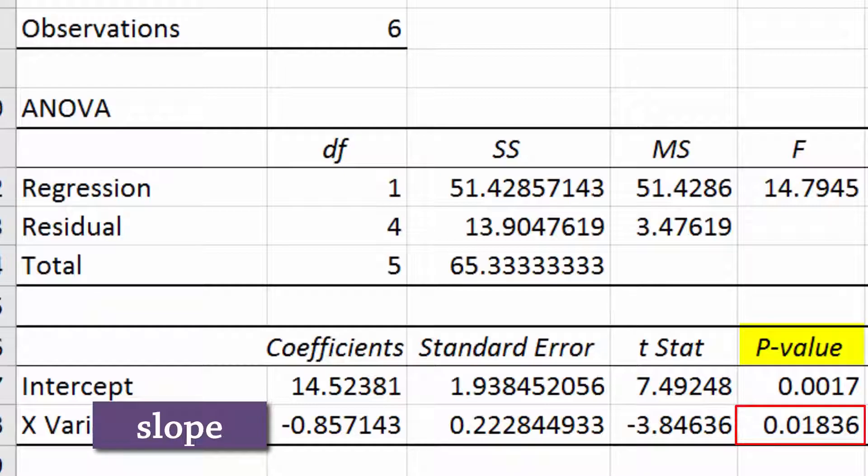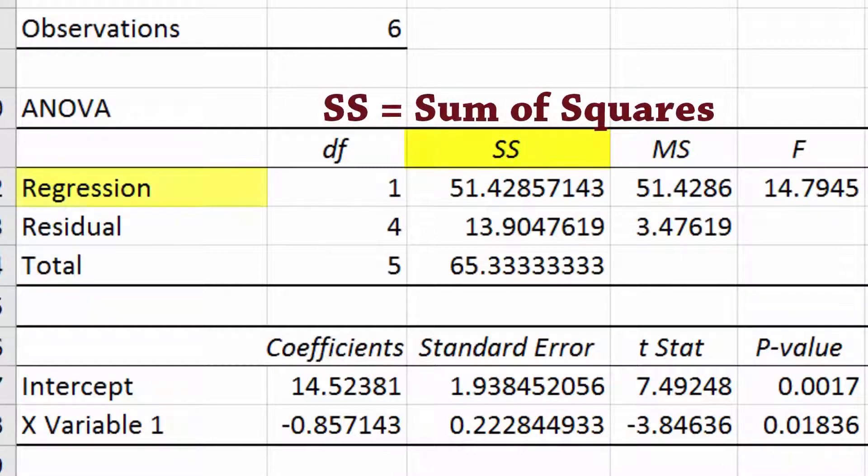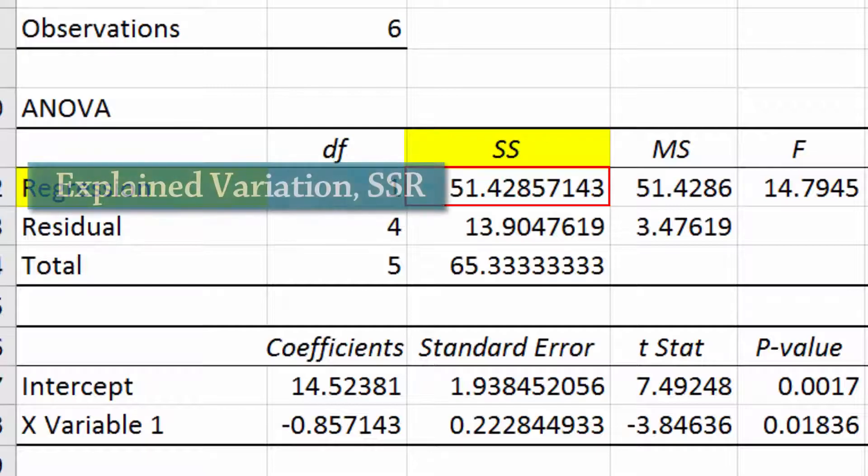The sum of squared regression here, called SSR, is the amount of variation explained by the regression of Y on X.